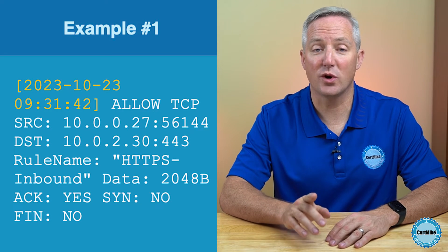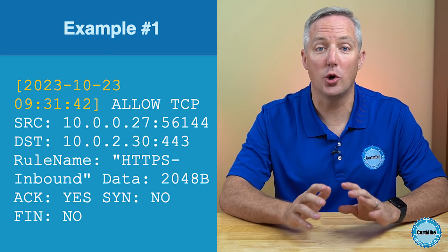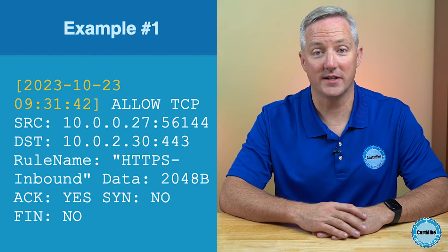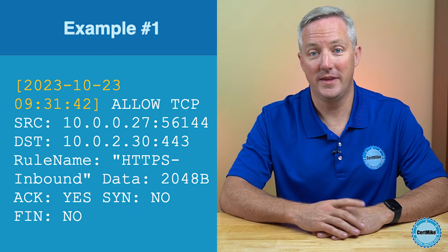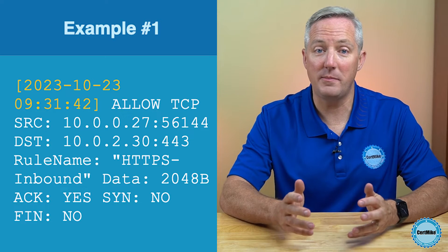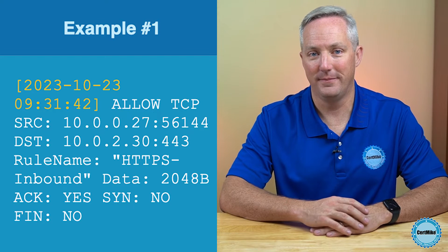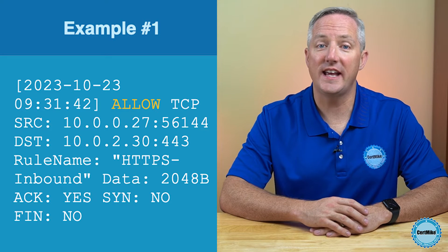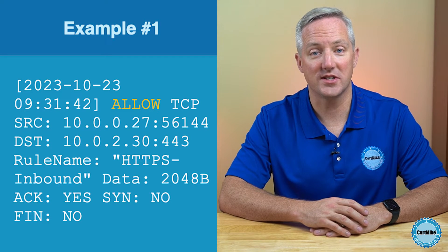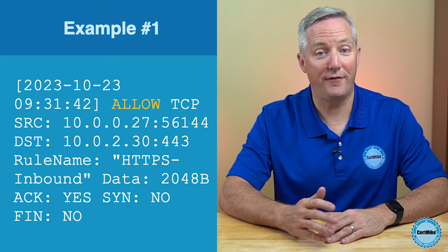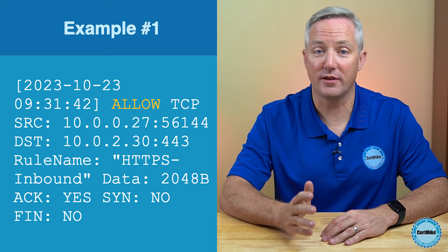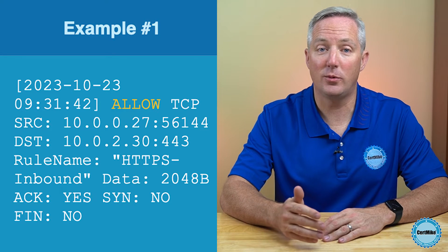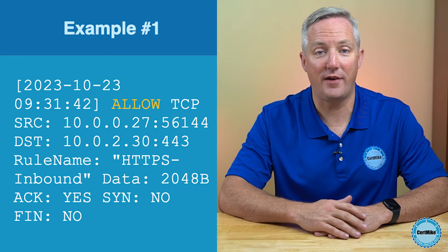Remember, the system is recording these timestamps using its own clock, so we'll need to know how our system clock is set to interpret this time. This might be local time or it might be in universal or Zulu time. Next, we have a keyword indicating the outcome of the firewall rule processing. "Allow" means that the traffic or data packet met the conditions of the firewall rule set to permit this kind of traffic, and the firewall allowed the traffic to pass through.